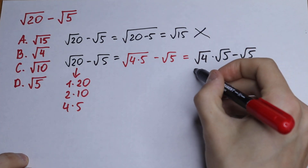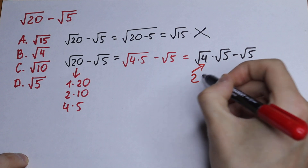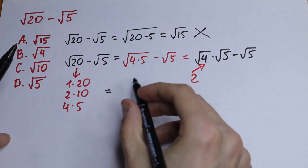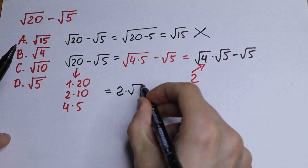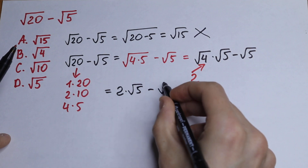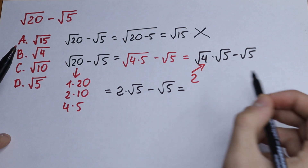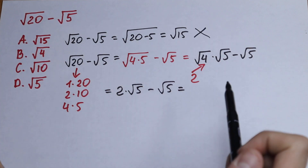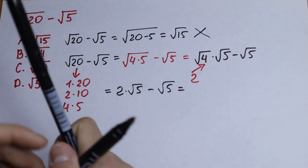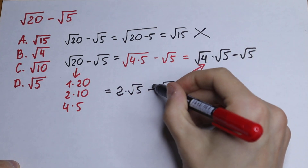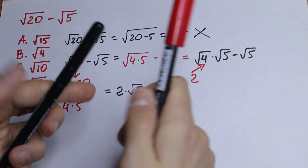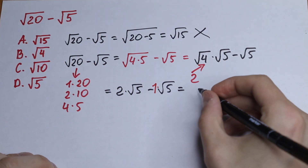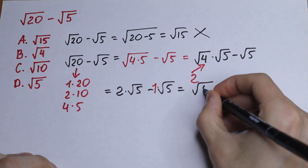We know that square root of 4 equals 2. So we get 2 times square root of 5, minus square root of 5. Right here we have 2 square roots and right here we have 1 square root — so 2 square root of 5 minus 1 square root of 5 equals 1 square root of 5.